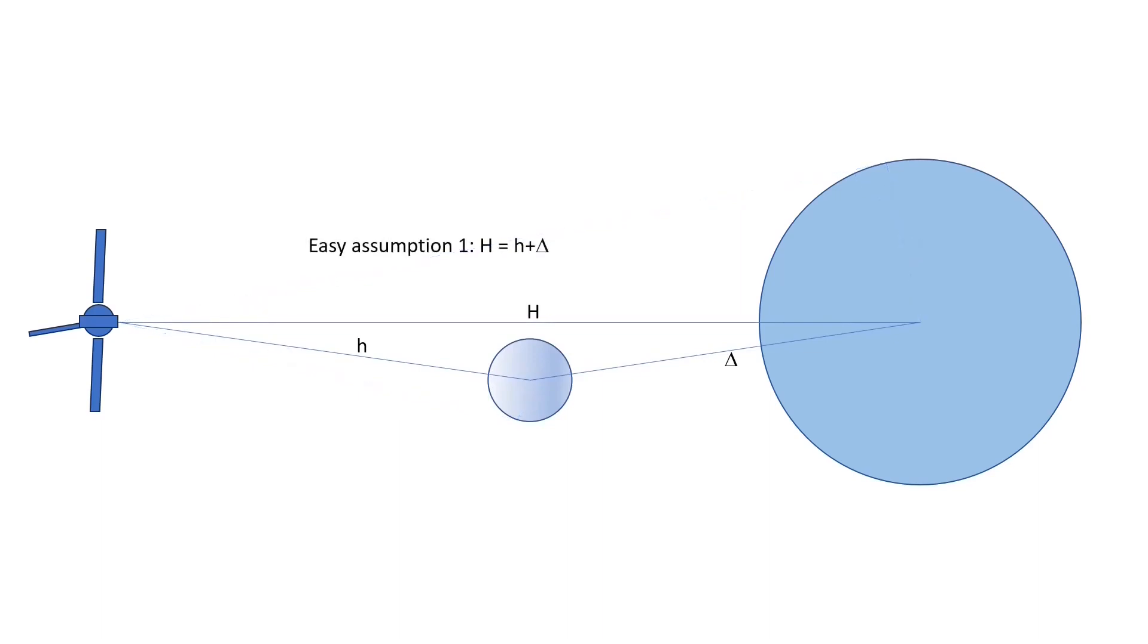Alright, so here we have a very thin triangle. On one side we have capital H, on the other side we have little h, and then Delta. Well, turns out that little h plus Delta is only 16 kilometers longer than that very long 1.5 million kilometer capital H. And so as a simplifying assumption, I'm going to say let capital H equal little h plus Delta.